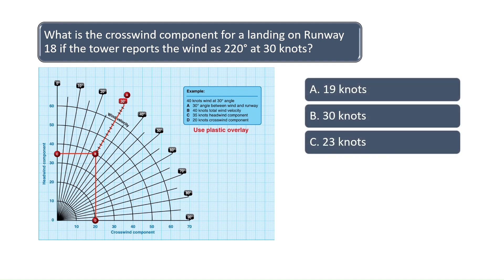To find the answer to this question, first subtract the runway direction of 180 degrees from the wind direction of 220 degrees to get 40 degrees. Since the wind speed is reported at 30 knots, draw a line on the 30-degree arc in the diagram as highlighted by the red dashed line in the chart.